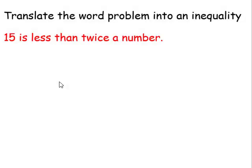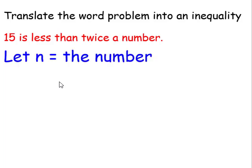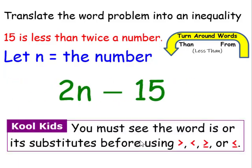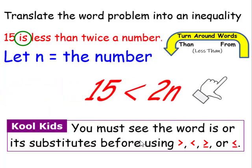Let's translate this word problem into an inequality: '15 is less than twice a number.' I'll define the variable saying let n equal the number. A lot of people might still think of this as a turn-around word and write it as 2n minus 15. But if you see the word 'is' or its substitutes, you're going to have to use an inequality symbol. This would be incorrect because we have 'is less than,' so we're going to have to use the less than symbol.